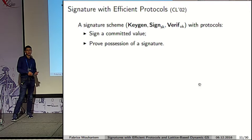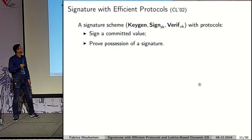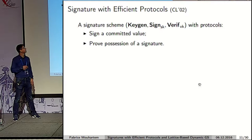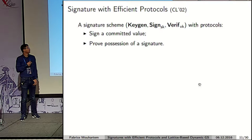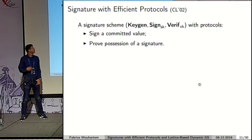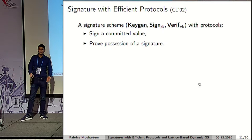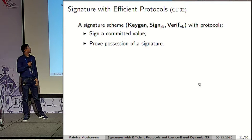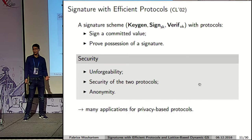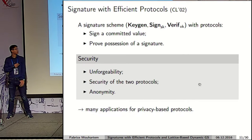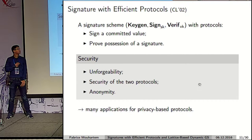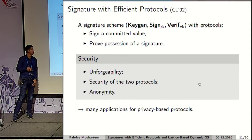To enable anonymous credentials, we need signature with efficient protocols. It is basically a signature scheme with keygen, sign, and verify algorithms, plus two companion protocols: one for signing a committed value and one for proving possession of a signature. The security notions are unforgeability, security of the two protocols, and anonymity.